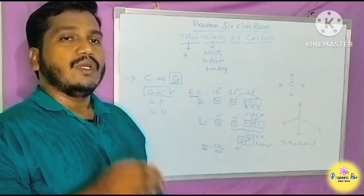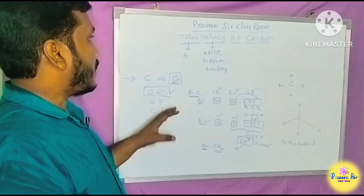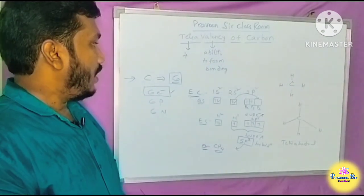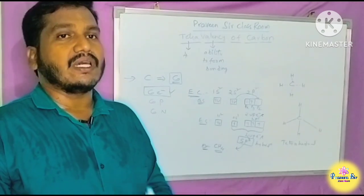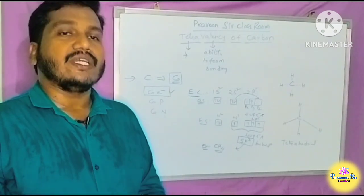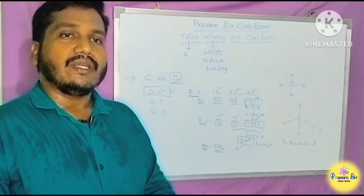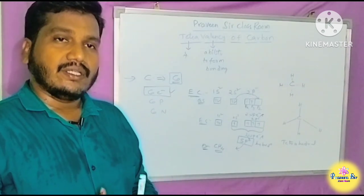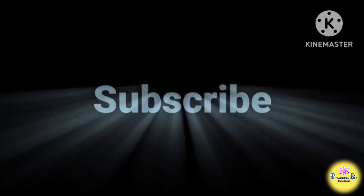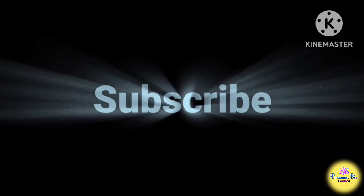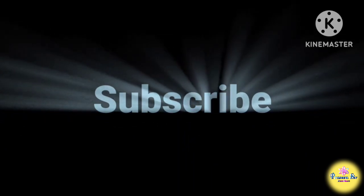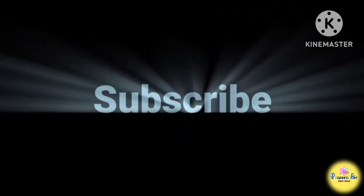So, this is about the tetravalency of carbon — that means carbon can form four bonds. This ability results in a large number of carbon compounds, which is why the study of carbon compounds is so extensive.